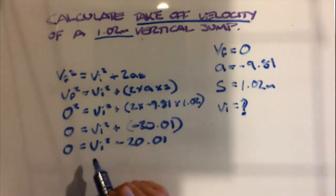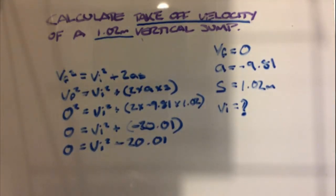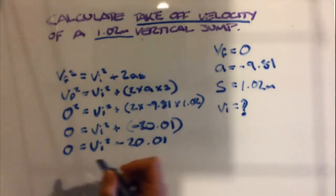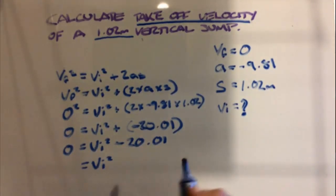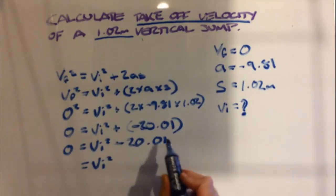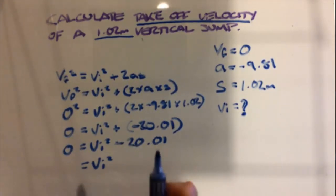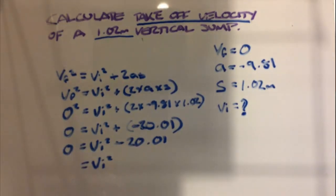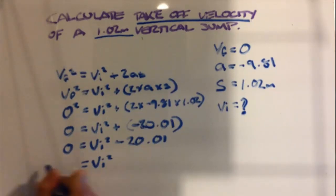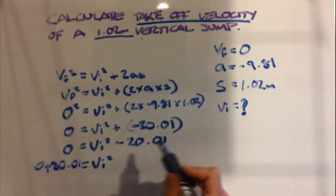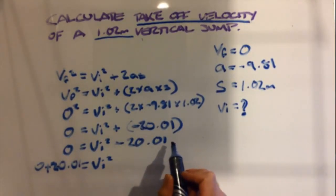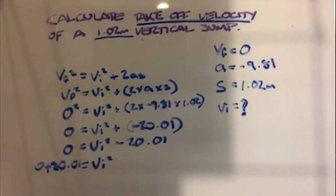We now need to get our initial velocity on its own. How we can do that is to add 20.01 on this side to get rid of that there. But whatever we do on this side, we have to do on the other side of the equation. So we land up with 0 + 20.01. Because we added 20.01 to this side, we have to add 20.01 to that side.